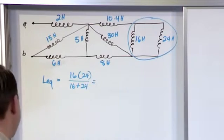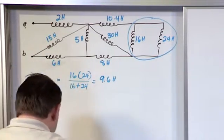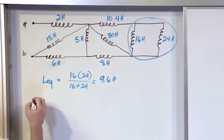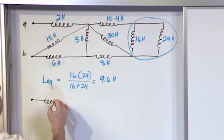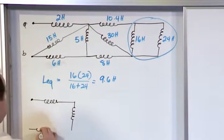And when you calculate that, what you would get is 9.6 henrys. And again, I know it's a pain, but you really should try to go ahead and redraw the thing every time. That way you don't make a mistake. It takes a little bit longer, I agree with you, but it is faster in the long run when you don't get a mistake.